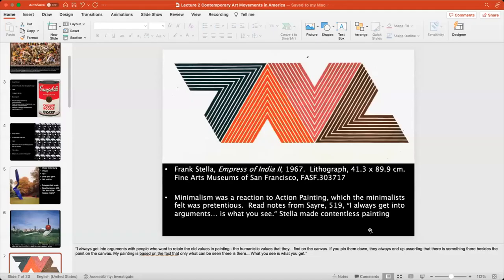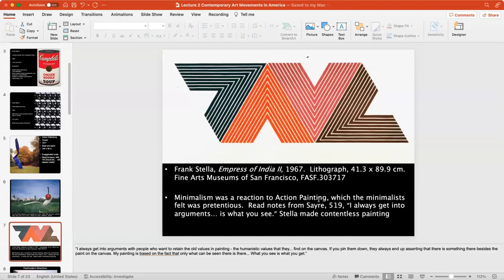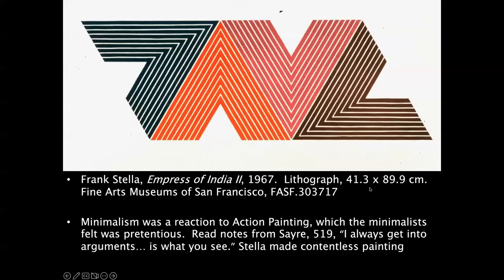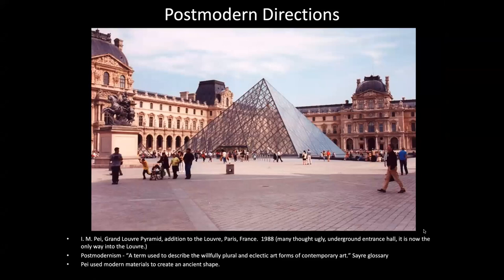Stella said: 'I was getting into arguments with people who want to retain the old values in painting — the humanistic values they find on the canvas. If you pin them down, they always end up asserting that there is something there besides the paint on the canvas. My painting is based on the fact that only what can be seen is there. What you see is what you get.' You could argue whether that statement itself becomes the meaning of the painting.